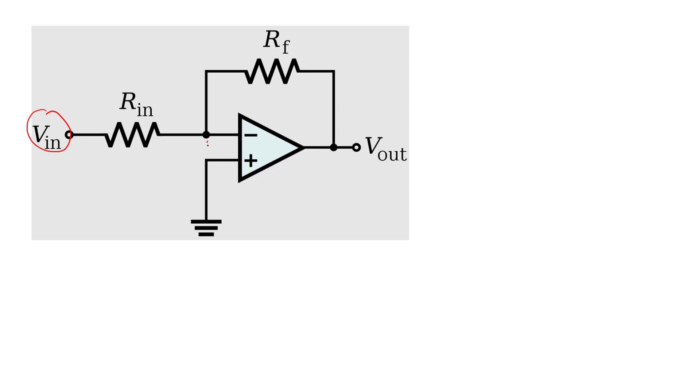In an ideal op-amp, there is a virtual short between the inverting terminal and non-inverting terminal. Here, the non-inverting terminal is connected to ground, so 0 volts appears across this terminal. Due to the virtual short phenomenon, this node voltage is also 0 volts.